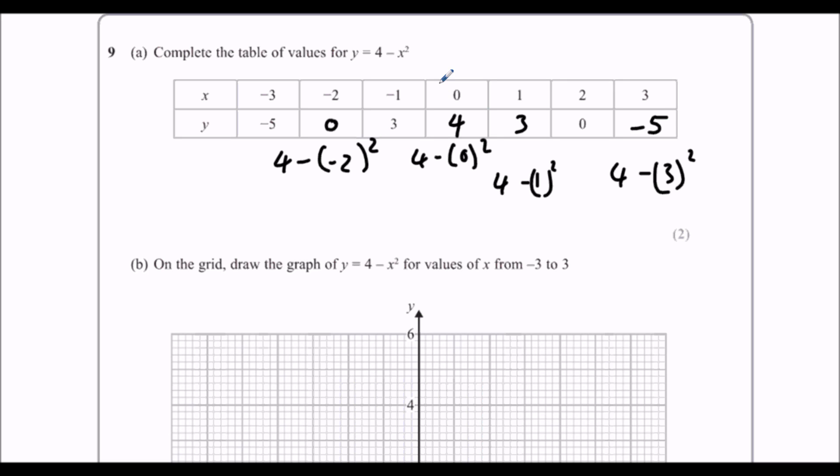Now you can see we've got a nice symmetrical relationship. We've got 4 in the middle, then 3 and 3, 0 and 0, minus 5, minus 5. So it's going to make a nice parabola shape here. This one's an upside down, a sad face, an N shape, not a U shape.